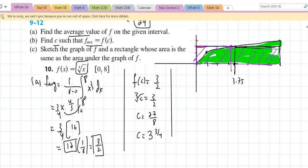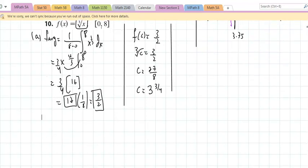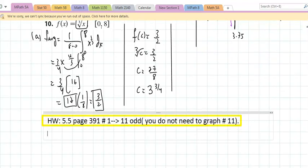All right, and then they say, well, sketch the graph of F and the rectangle. I just did that already, right? And that's how it works. If I find the area of this rectangle, I could figure out the area under the curve. And now that I got this down, let me give you the homework. There's the homework, and you don't need to graph number 11, you just need to integrate. And that will work.